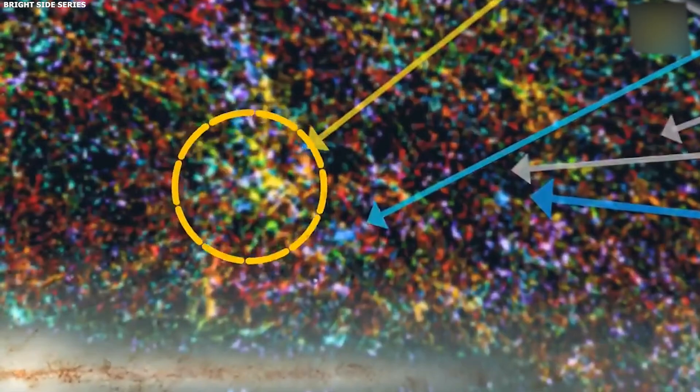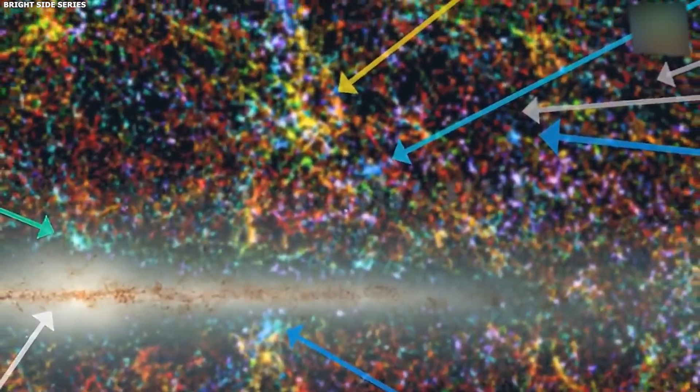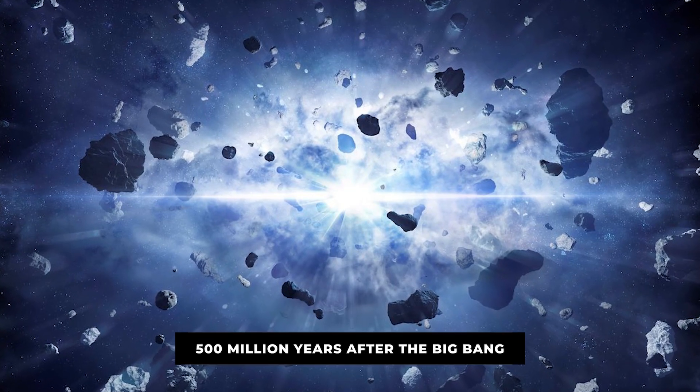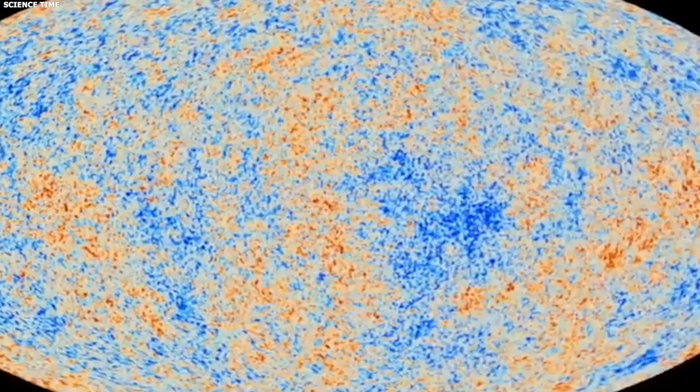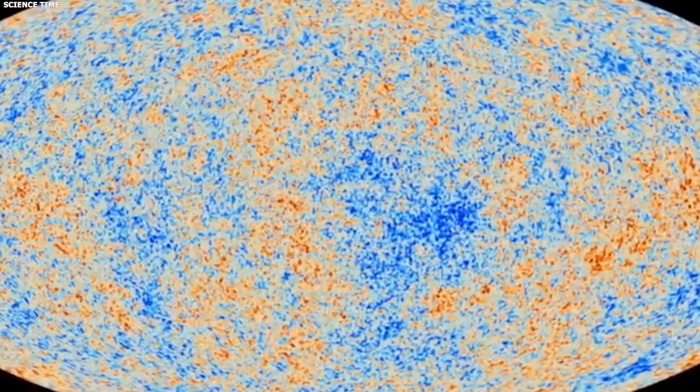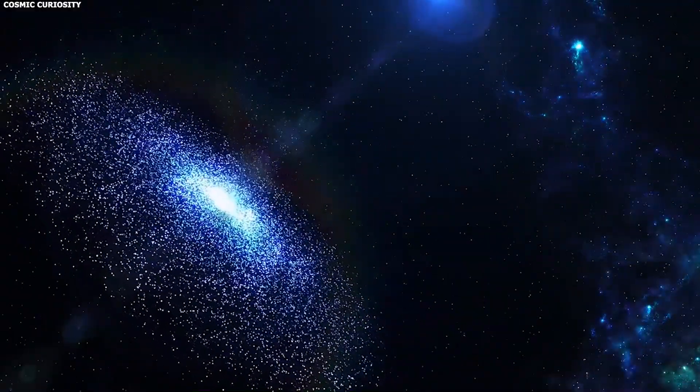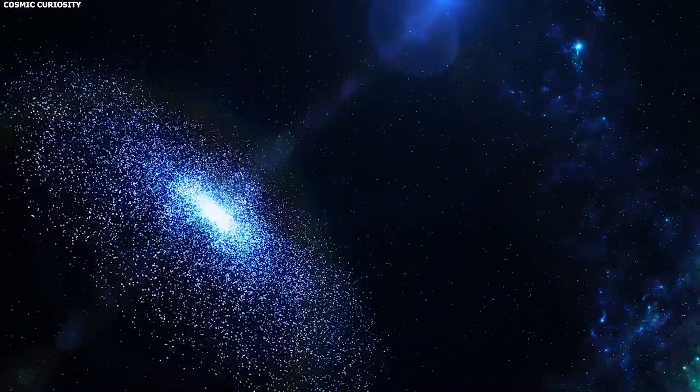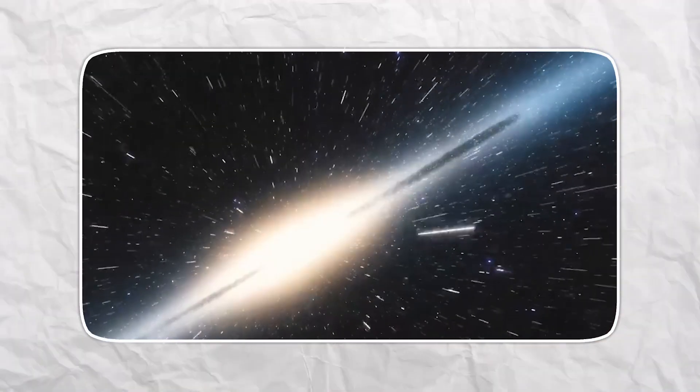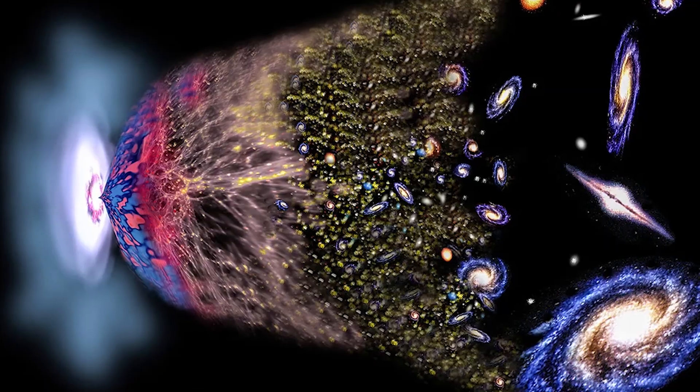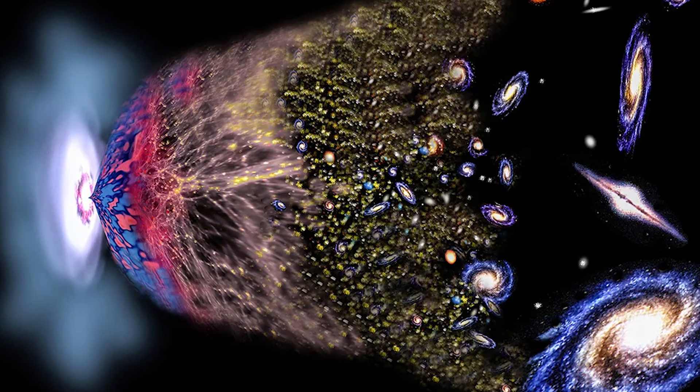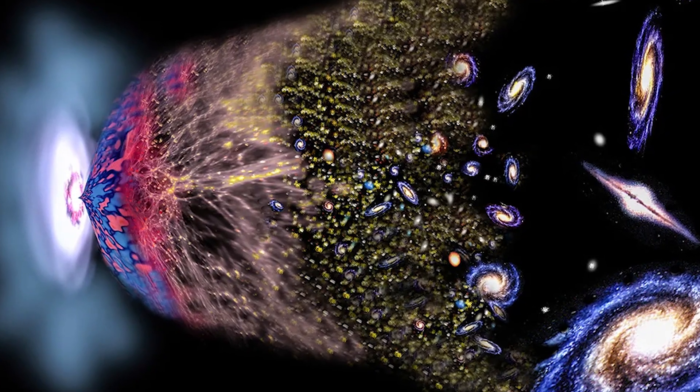The theory made specific predictions. The first large galaxies shouldn't appear until at least 500 million years after the Big Bang. Before that, there just wasn't enough time for all those mergers to happen. And early galaxies should be simple, mostly hydrogen and helium. Heavy elements like carbon, oxygen, and nitrogen would come later, forged in the cores of stars that had to live, die, and explode first.